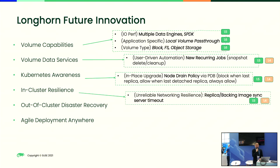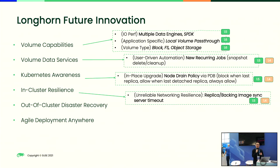And next, in-cluster resilience. To make sure LongHorn will be a resilient solution at the storage level, because storage is always a sensitive component for the infrastructure. So we came out with unreliable network resilience functionality to make sure users can tune replica and backing image sync server timeout, to make sure we can handle situations when something is wrong with replicas. And this will show up in 1.5.